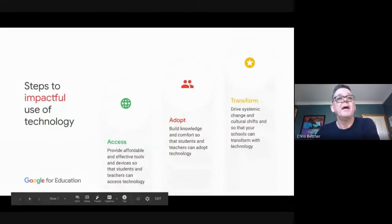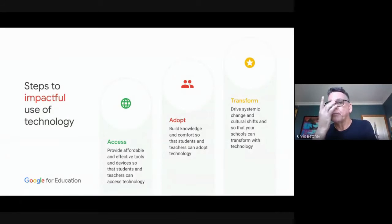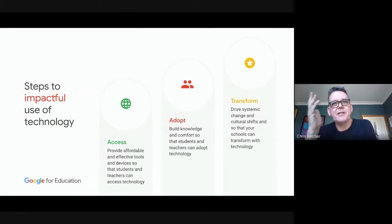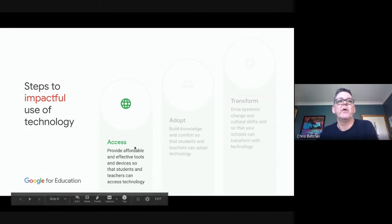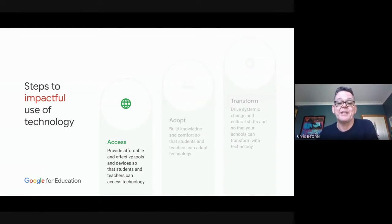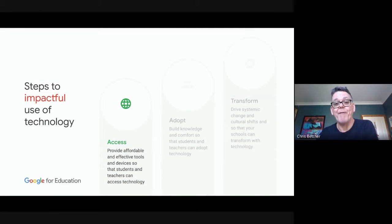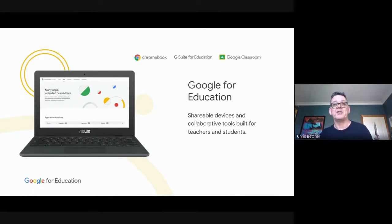There are three aspects we talk about on the Google for Education team: access, adoption, and transformation. That access piece is all about providing affordable and effective tools and devices so students and teachers can access technology. You can't do much unless you've got the technology, so how do you get technology into students' hands?